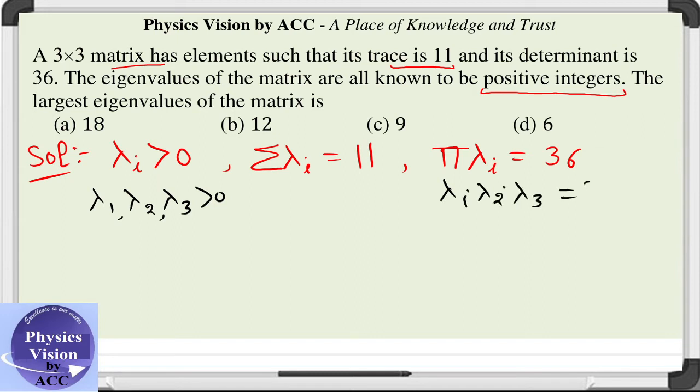So let us see the possible combinations by doing the factorization of this number, which can be written as 1 into 2 into 2 into 3 into 3.